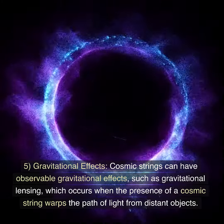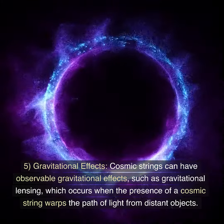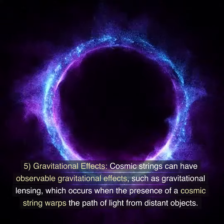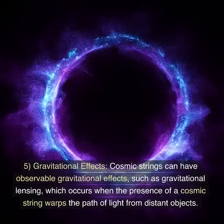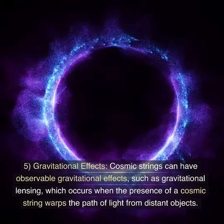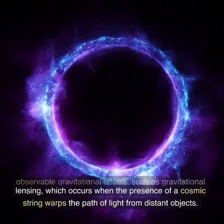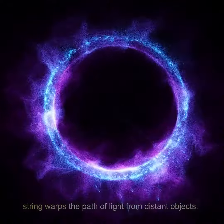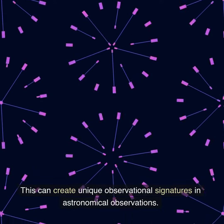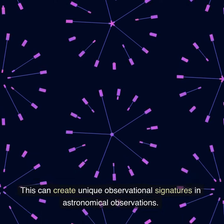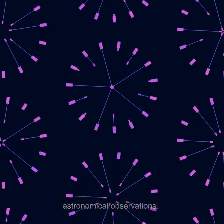Cosmic strings can have observable gravitational effects, such as gravitational lensing, which occurs when the presence of a cosmic string warps the path of light from distant objects. This can create unique observational signatures in astronomical observations.